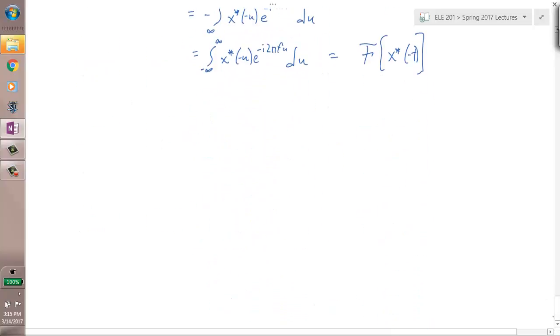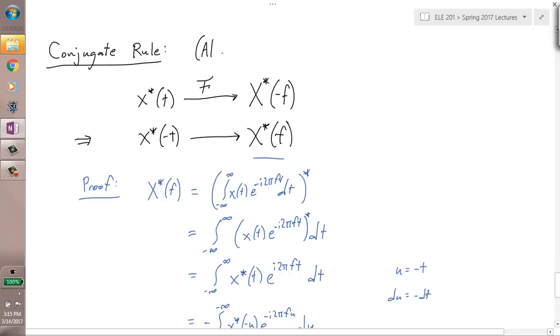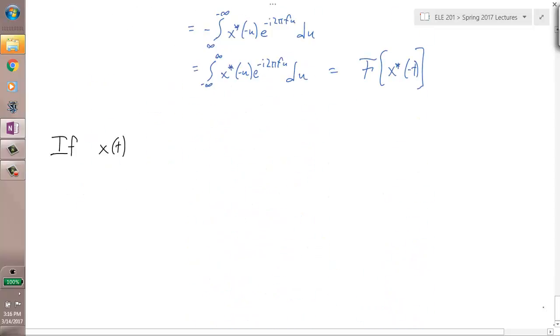Now, on to something more interesting. That is, the implications of this rule. So notice, if X of T is real, by the way, all of this rule holds in discrete time as well. Let's put that here. Also, it's continuous time and discrete time, although I'm just giving the proof and statement for continuous time. If X of T is real, what does that mean? That means that X of T equals X conjugate of T. Therefore,